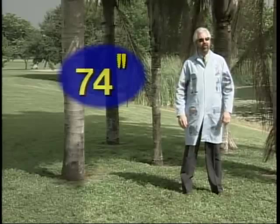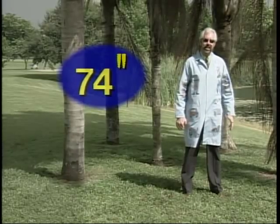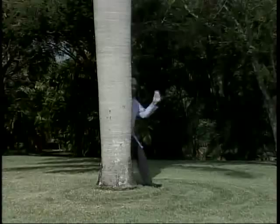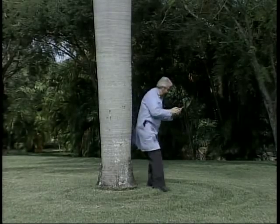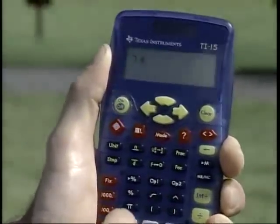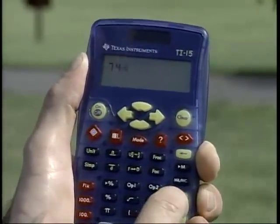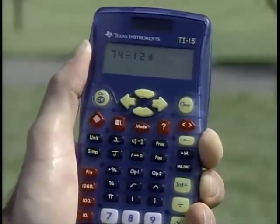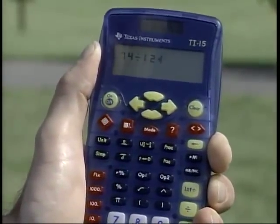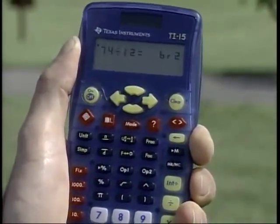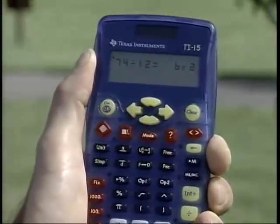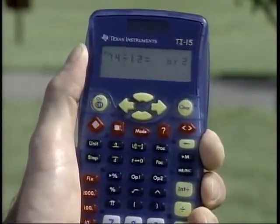I am 74 inches tall. How tall am I in feet and inches combined? Remember, there are 12 inches in a foot. And since we're going from a smaller unit of measure to a larger, we divide. I'll divide 74 — the number of inches tall I am — by 12, the number of inches in a foot. The quotient is 6, remainder 2. That means I am 6 feet, 2 inches tall, because the remainder of 2 represents the leftover inches.